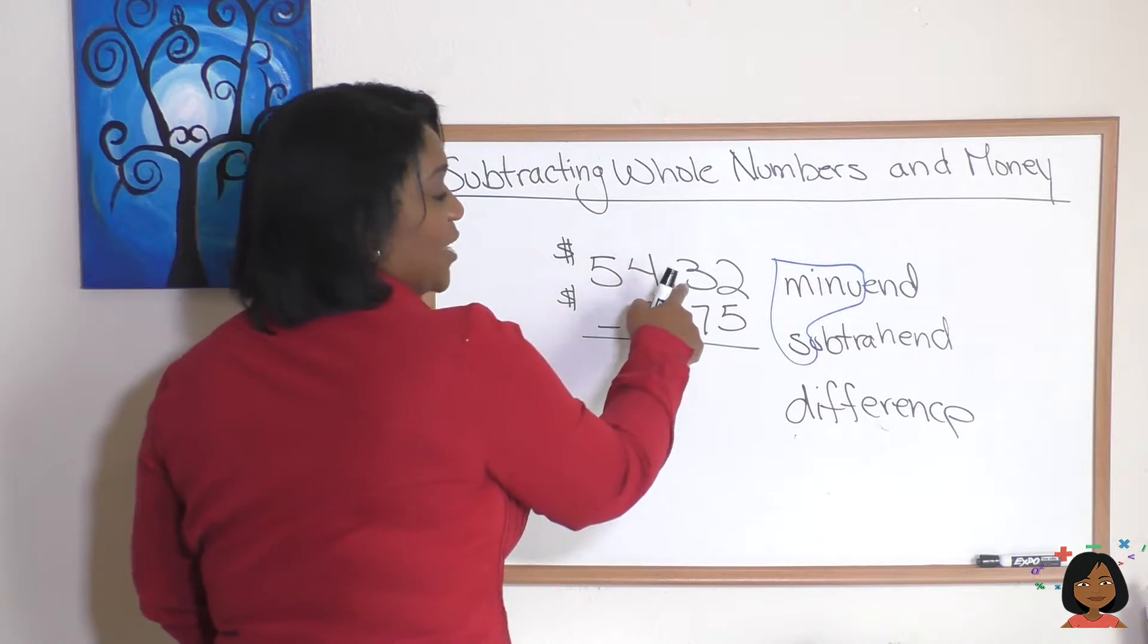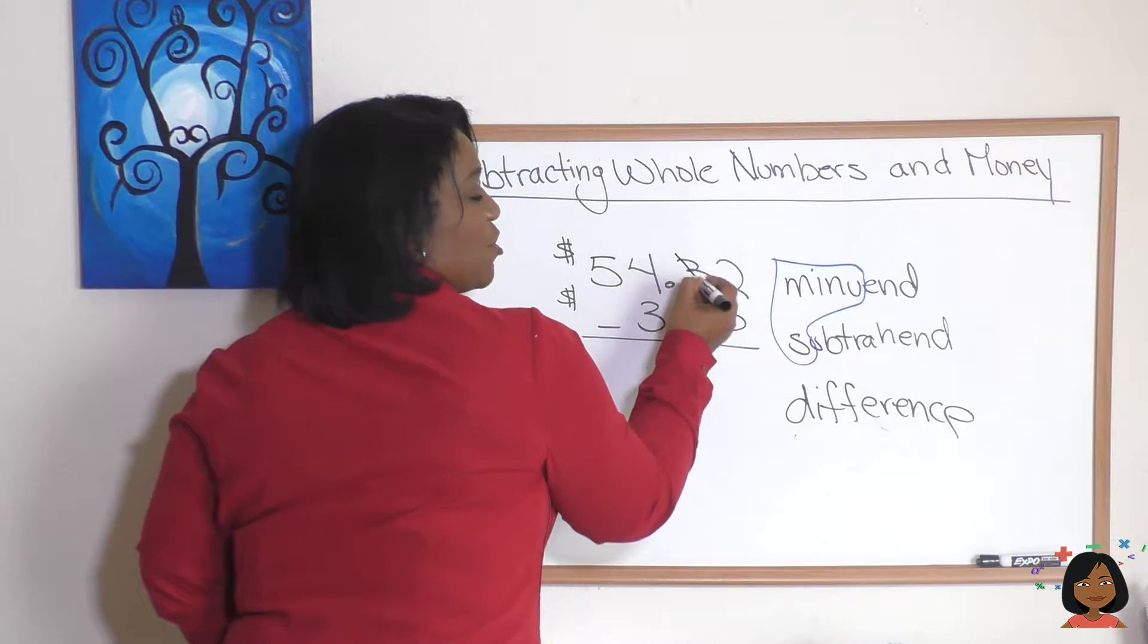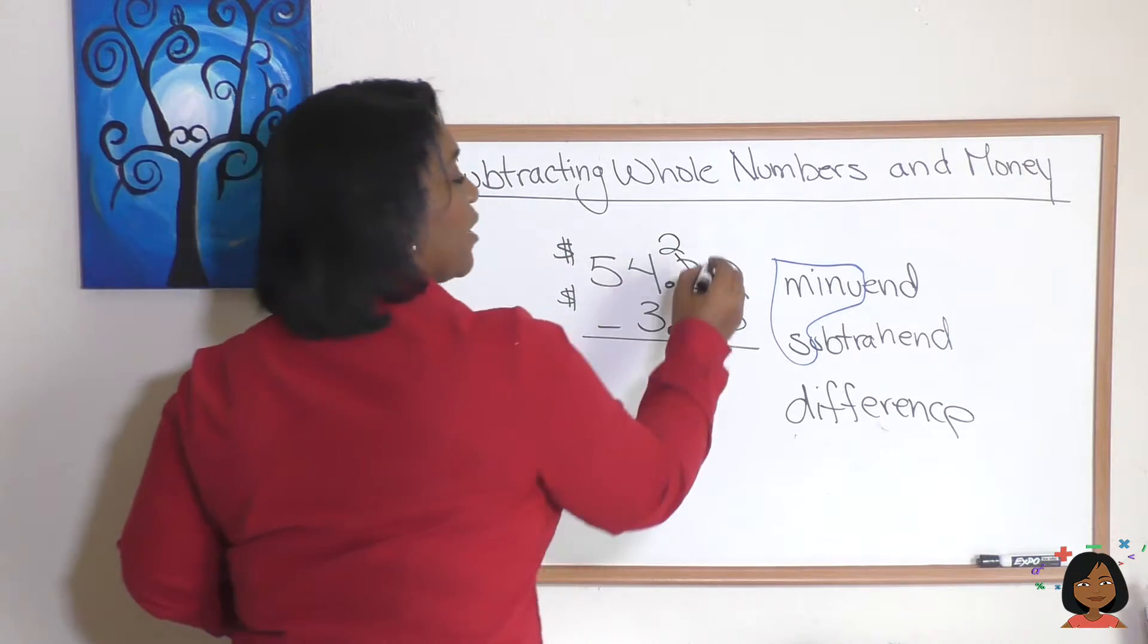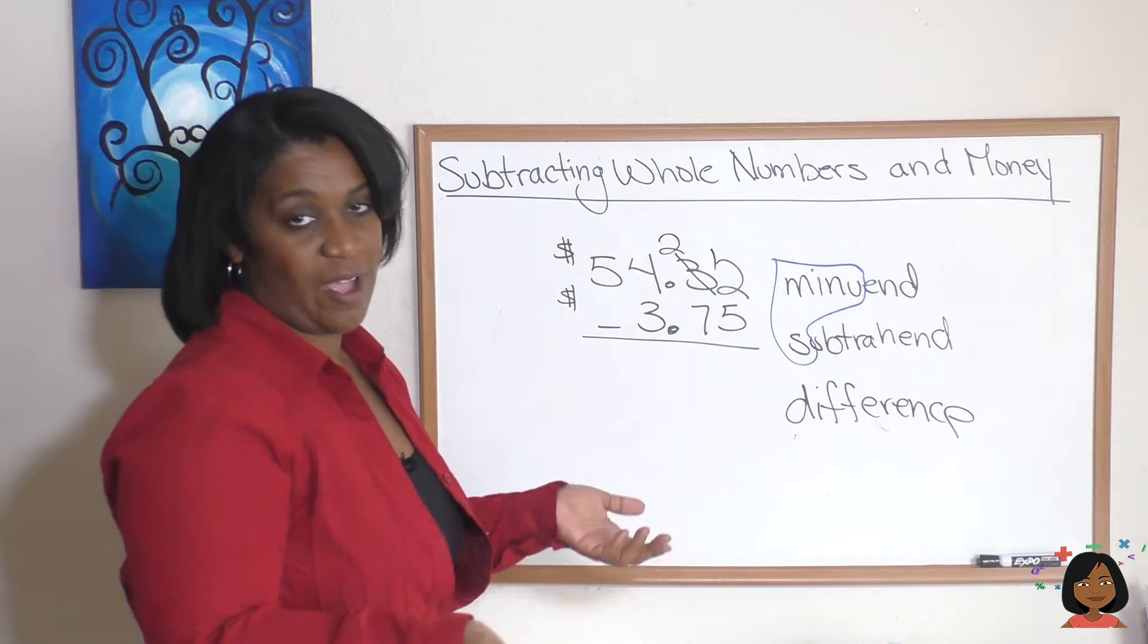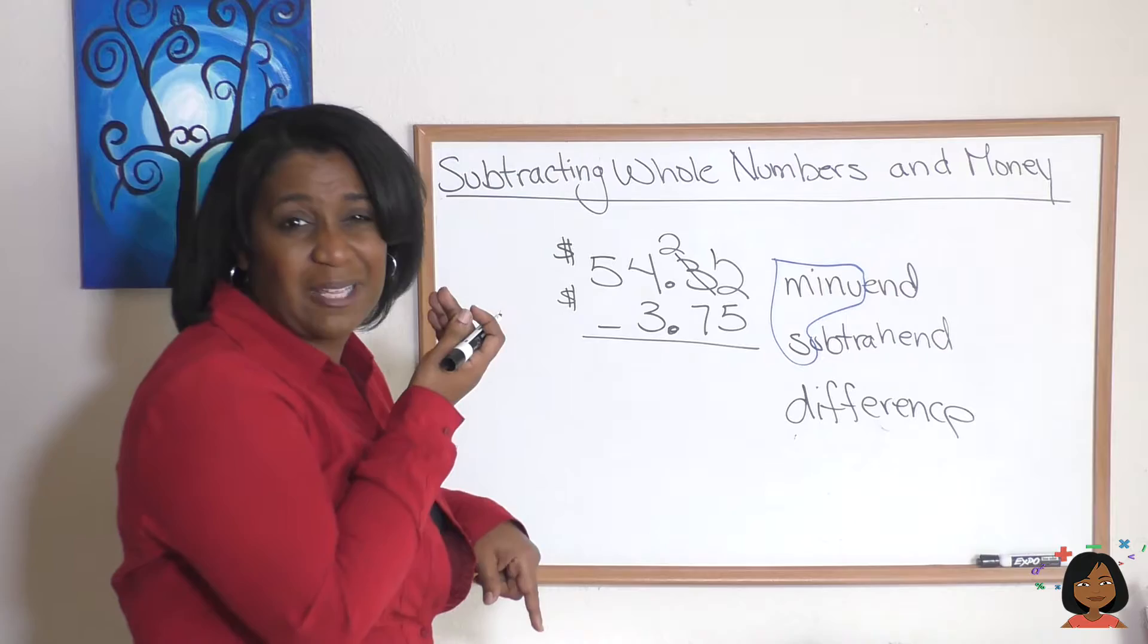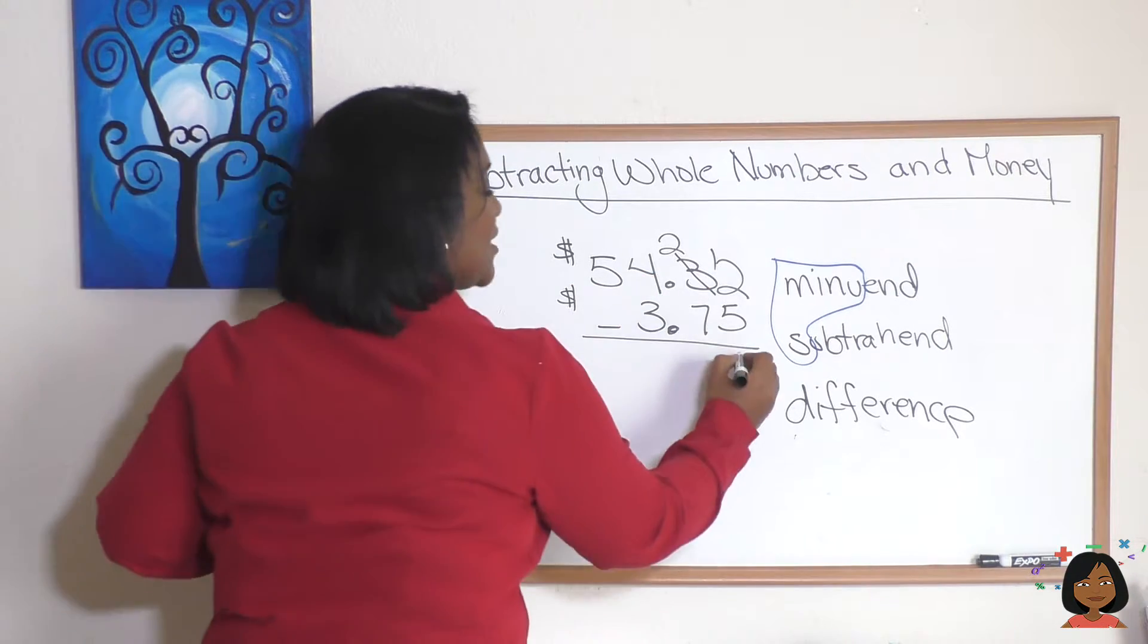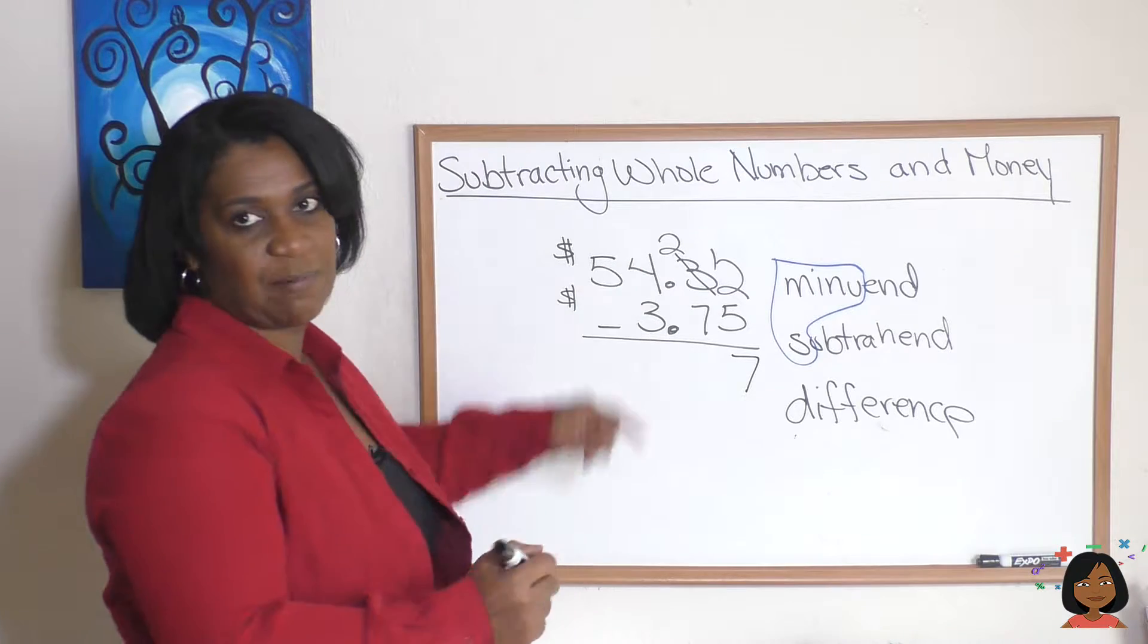I'm going to borrow technically ten from my three, cross this three out, make this a two, and bring a one over to make this twelve. So I've borrowed ten because really this three is a thirty. Here we go, twelve minus five, now we can do it, is seven. Oh wait we hit the same problem again, two minus seven can't do it.